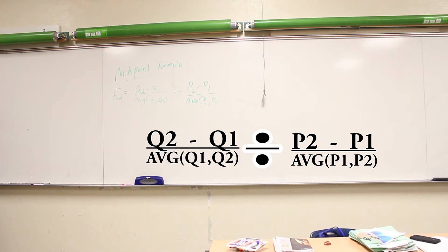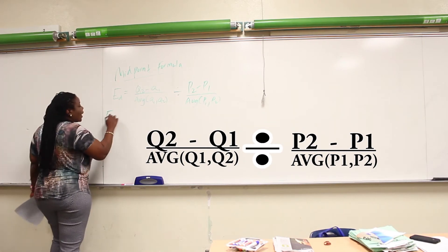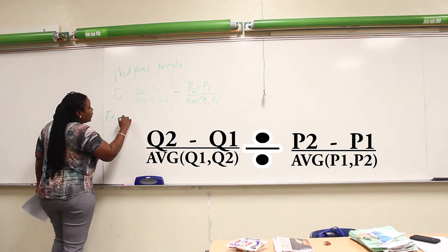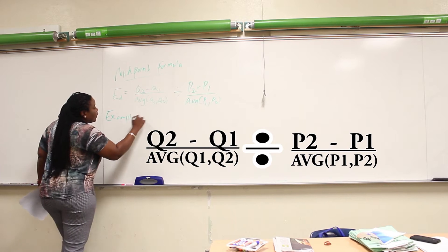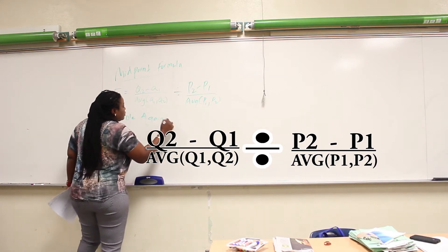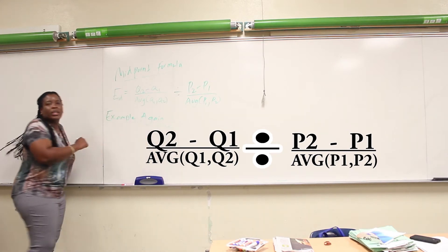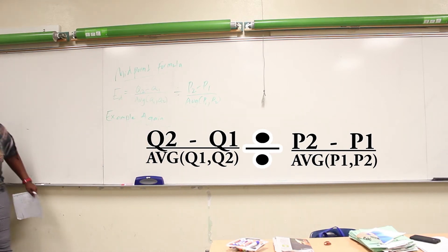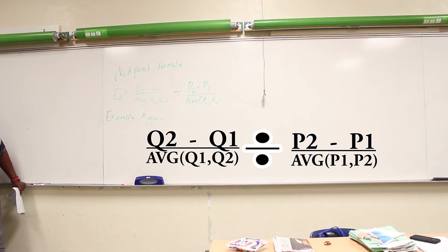We're going to do our example again using this method so you can see how it works. Don't worry about any new and old — figure out your two quantities and your two prices and there you go.